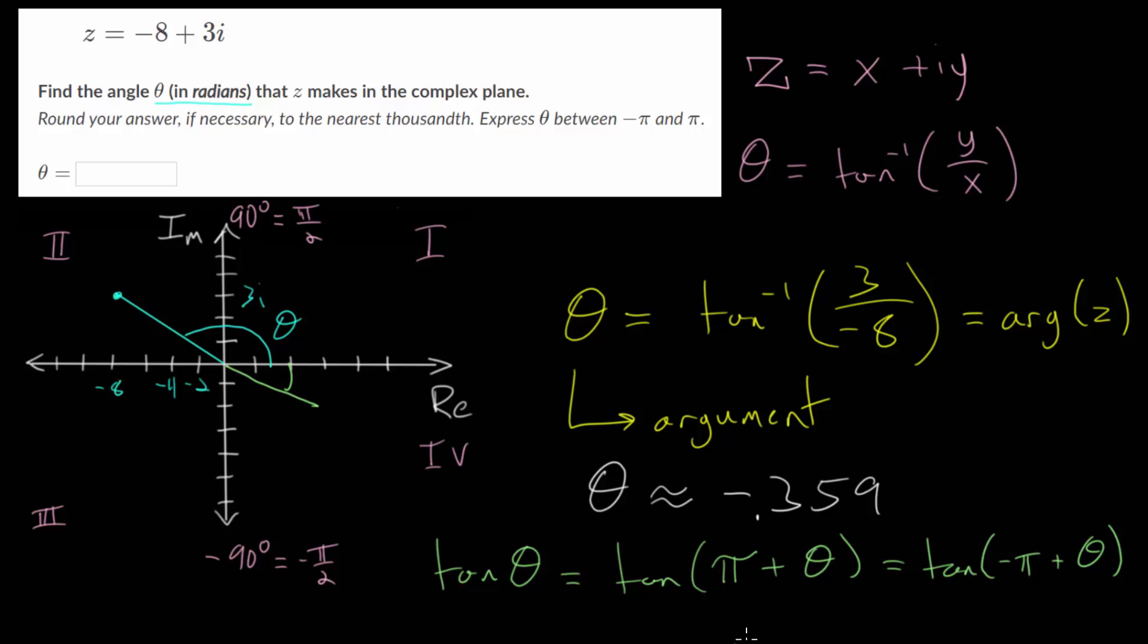And to determine which one to use, we need to plot our point and consider what angle the formula gives us. And by drawing in this angle, which is down here, we can recognize that we need to add to that angle, specifically 180 degrees or pi radians, to be able to get the angle we want.